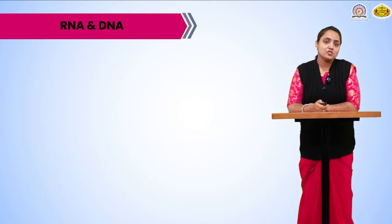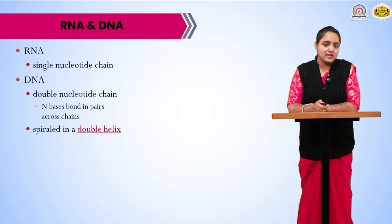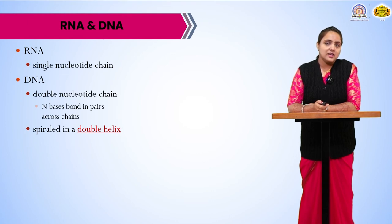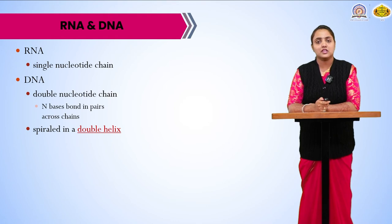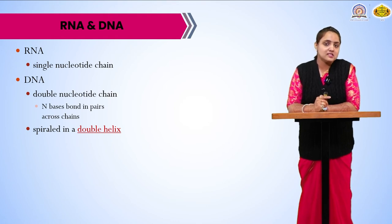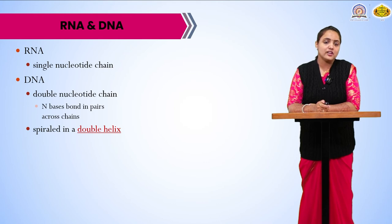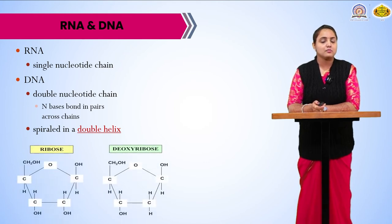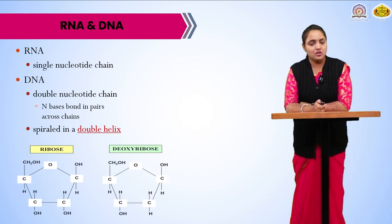Moving towards DNA and RNA: RNA is a single nucleotide chain, while DNA is a double nucleotide chain with N bases bonded across the chain. It is spiral — a double helix running 3 prime to 5 prime and 5 prime to 3 prime — in a helical structure at the central axis. You can see the deoxyribose and ribose sugar present in both.